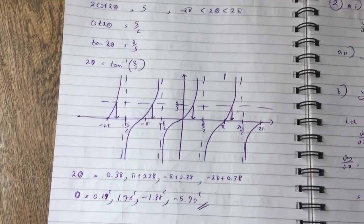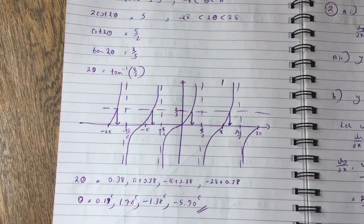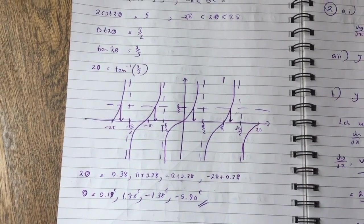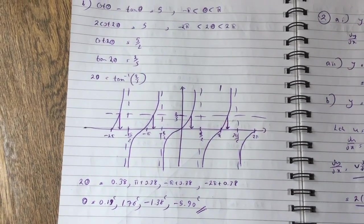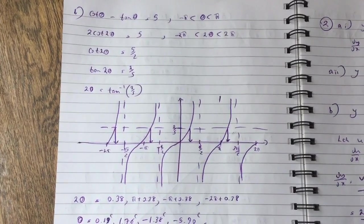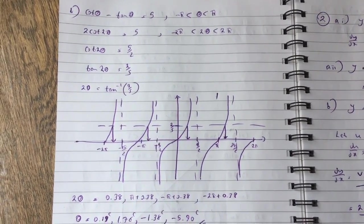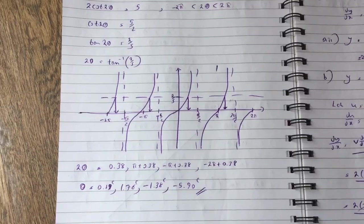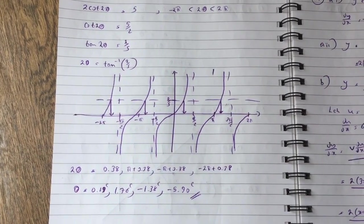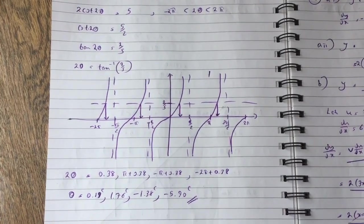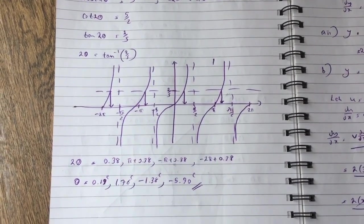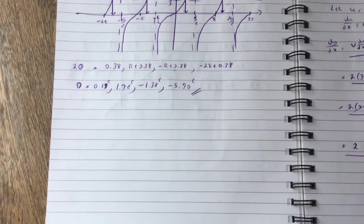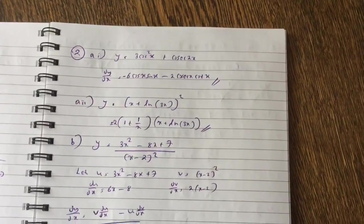So 2θ = tan⁻¹(2/5). I've drawn the tan graph from minus 2π to 2π and drawn a line across at 2/5, showing all the intersections — there are four intersections. I prefer the graph method over the CAST diagram; you can see the roots clearly. So 2θ equals tan⁻¹(2/5) ≈ 0.38, or π + 0.38, or −π + 0.38, or −2π + 0.38. Therefore θ ≈ 0.19, 1.76, −1.38, or −5.90. That's question one.